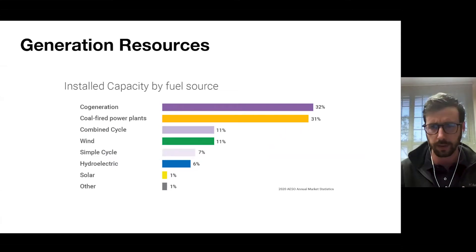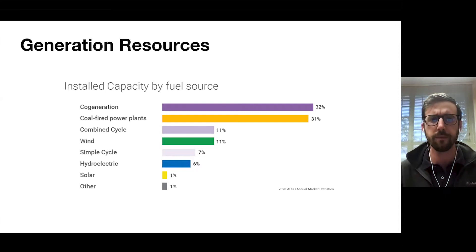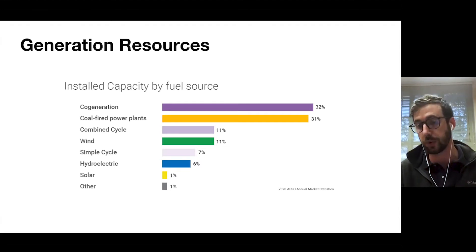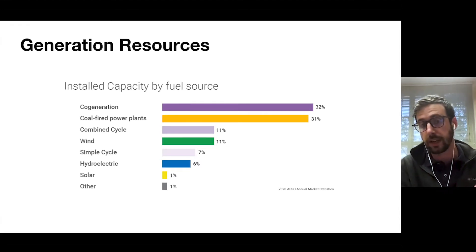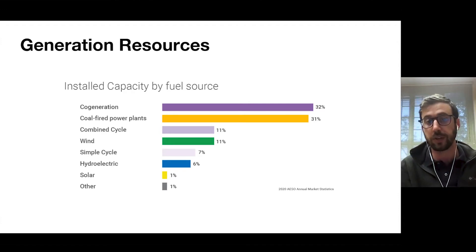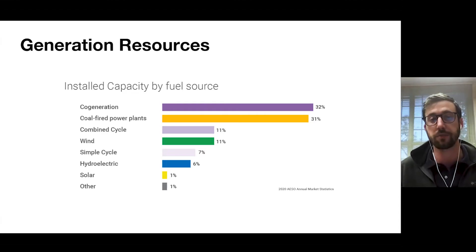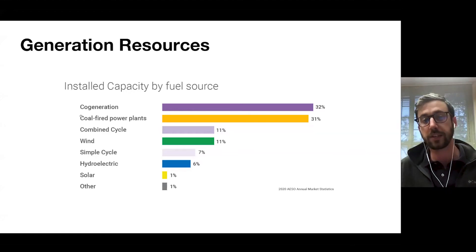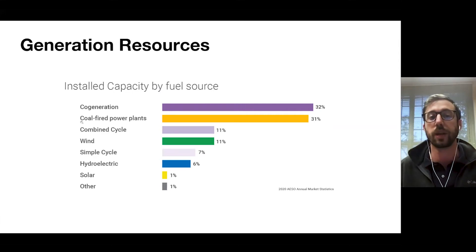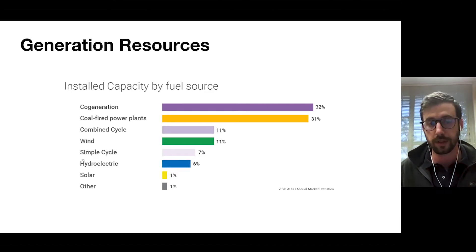We have a lot of different resources. In 2020, about 50% was gas — represented by cogeneration, combined cycle, and simple cycle — followed by coal. These are dispatchable resources, meaning I can call upon them when I want to. Then you have wind and solar, which come when they come, and hydroelectric, which you have a decent amount of control over. Other is primarily biomass.